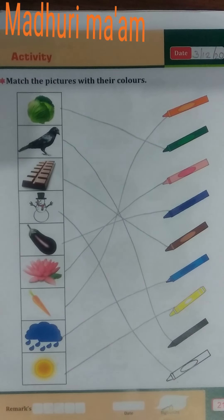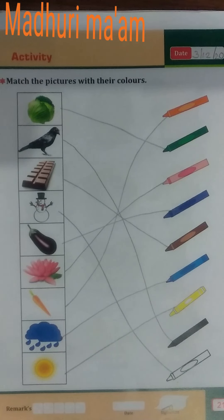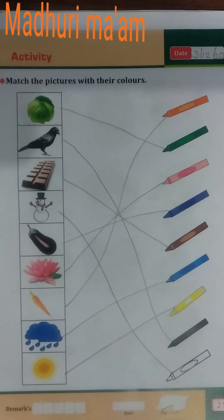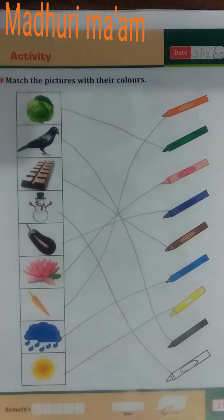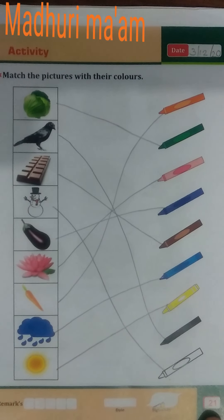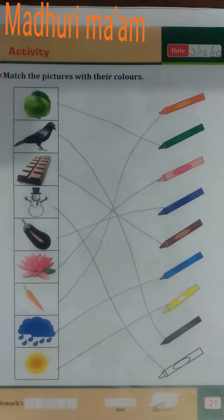So children, today what did we do? Today we matched all the pictures with their color. Picture ka jo bhi color rahata hai, uskai saath humne match kiya. You have to do this activity in your GK textbook on page number 21. Bye-bye. Thank you.